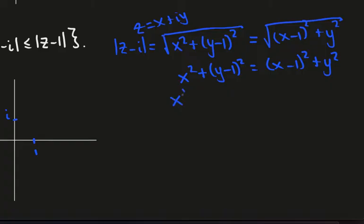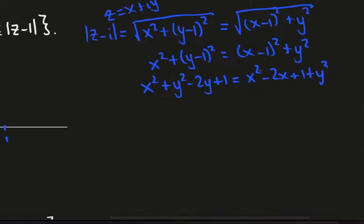I'll expand this out. I'll get y squared minus 2y plus 1 is x squared minus 2x plus 1 plus y squared. I can cancel these x squareds. I can also cancel the y squareds. And I can cancel the 1s. So minus 2y is minus 2x and so y equals x.